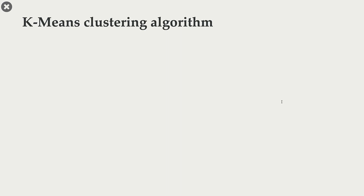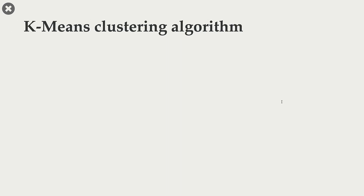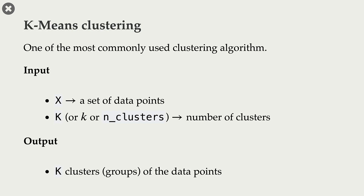In this video, we are going to talk about one of the most commonly used clustering algorithms: K-means clustering. This algorithm takes two inputs. The first input is X, which is our set of data points — these are our feature vectors. The second input is K, which is the number of clusters. We need to tell it in advance how many clusters or groups we want. The output of the algorithm is K clusters of the given data points.